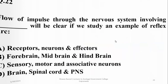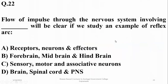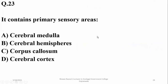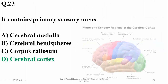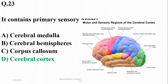Question 22: flow of impulses through the nervous system involving sensory, motor, and association neurons will be clear if we study an example of a reflex arc. The cerebral cortex is the region of the brain which contains primary areas for reception of different sensory impulses.